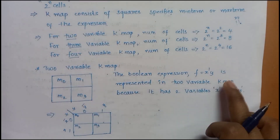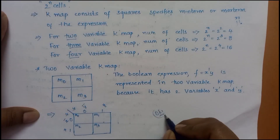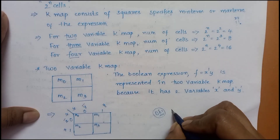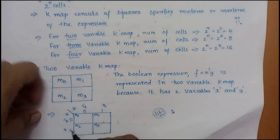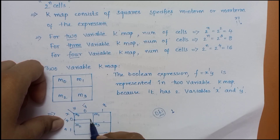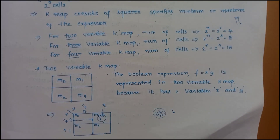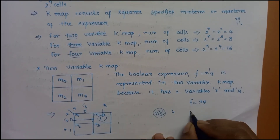We will represent F equal to x-dash y in the K-map. Also, we will represent F equal to xy and see how to map it.